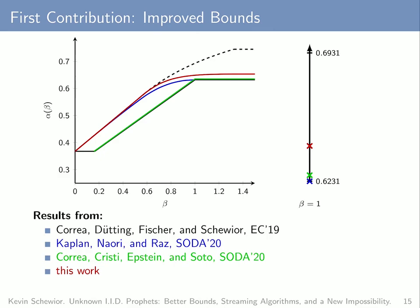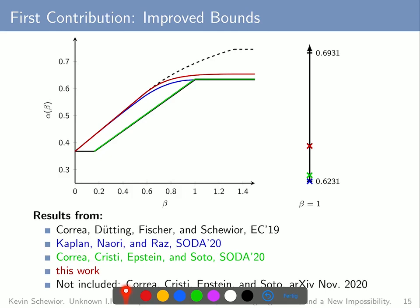So in this paper, we managed to get tight bounds for a whole range of values of beta and improved bounds for many other values of beta. I would also like to point you to a paper by Correa, Christi, Epstein and Soto that appeared on the archive in November of last year and makes some further progress towards closing the gaps. Apart from that, I would like to thank you for your attention, and if you have any questions feel free to approach me at the conference or write me an email.